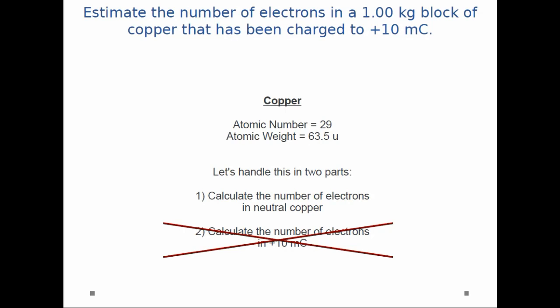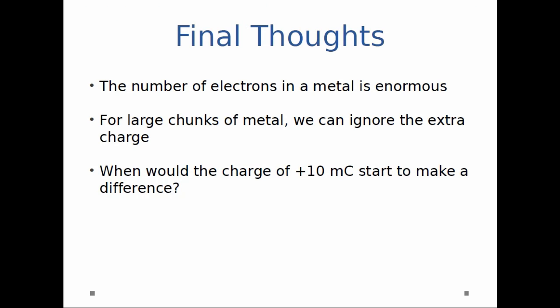So our answer is 2.75 times 10 to the 26th electrons. Just to go over some final thoughts: the number of electrons in a metal is enormous. Even a 1 kilogram chunk, just a couple of pounds, is a huge number of electrons.